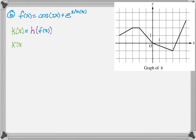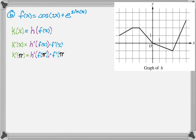By the chain rule, k'(x) = h'(f(x)) times f'(x). For k'(π), that's h'(f(π)) times f'(π) — and we just found f'(π) in the previous part. Now I need to figure out f(π): that's cosine of 2π plus e to the sine of π.